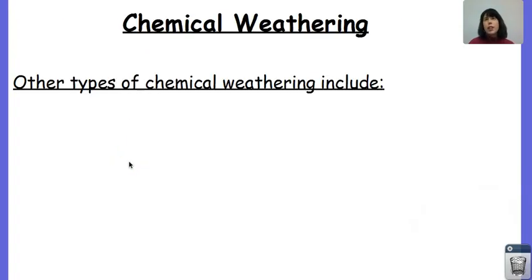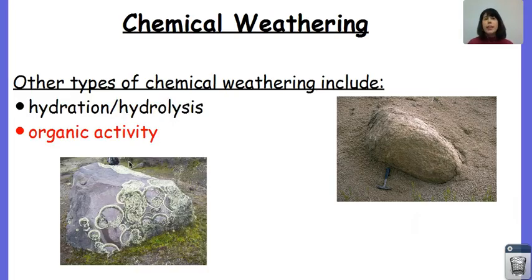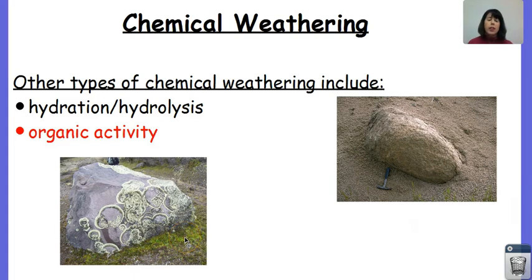There are other types of chemical weathering. These also include hydration and hydrolysis — very predominant with feldspar and hornblende — and organic activity, where organisms can actually react with the composition of the rock, just like the fungi shown here chewing away at the rock. Hopefully you found this video helpful. Please come to extra help and review your notes, and you can rewatch this video for extra review. Hope to see you soon. Take care. Bye-bye.